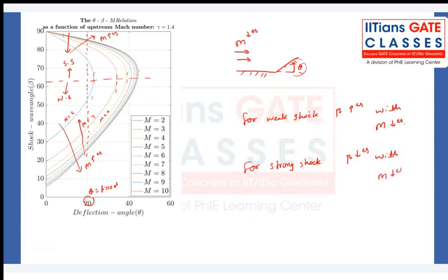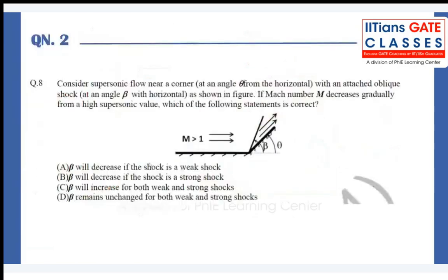Now looking at the options: option A says beta decreases if the shock is weak — that is wrong, we saw beta increases for weak shock. Option B says beta decreases if the shock is strong — that is correct. Options C and D are not correct because weak and strong shocks behave differently, and beta cannot remain unchanged since the theta-beta-M relation clearly shows variation. So option B is correct.